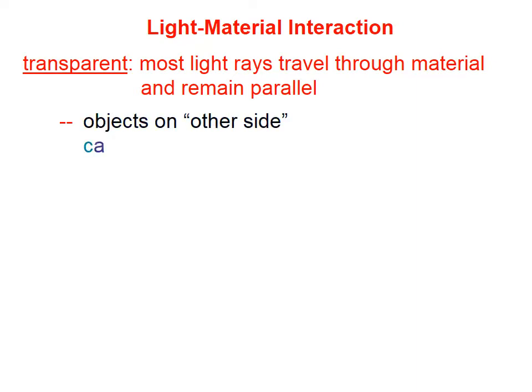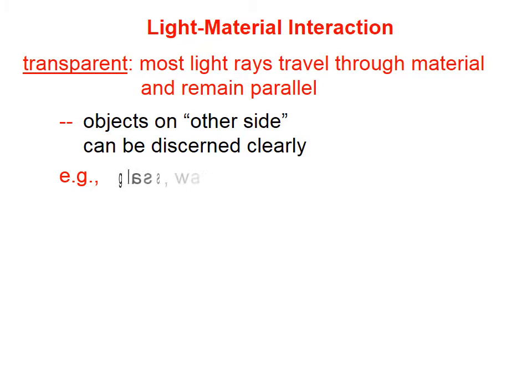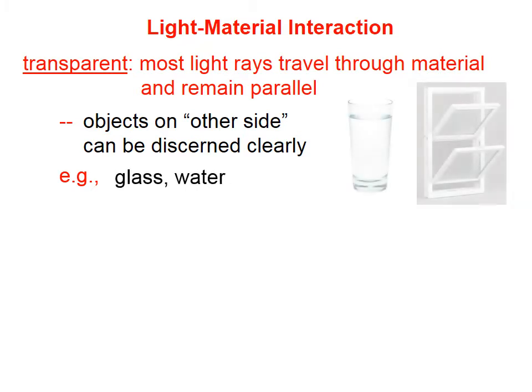When we say that something is transparent, what we mean is that most light rays travel through the material and remain parallel. That is, objects on the other side can be discerned clearly.